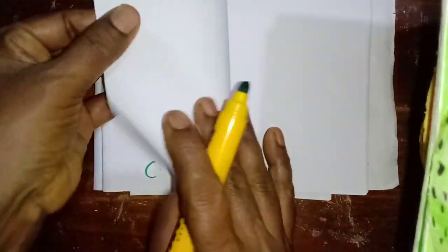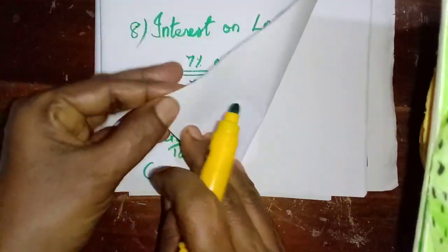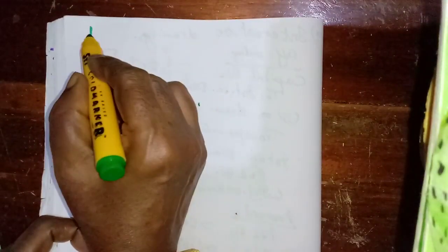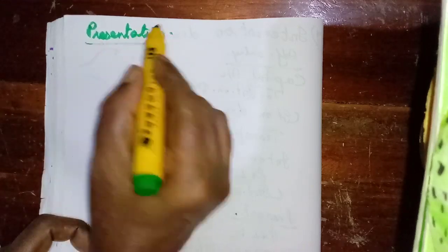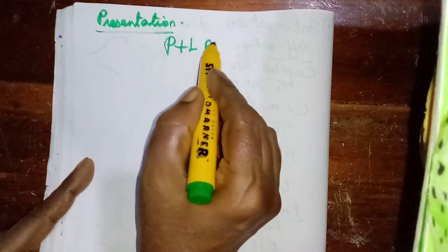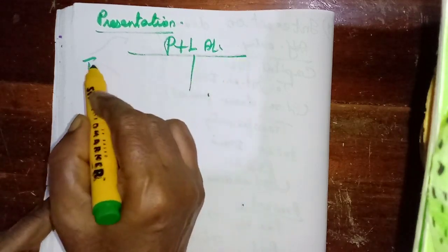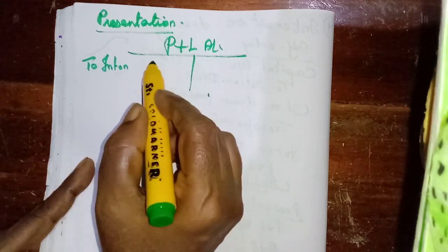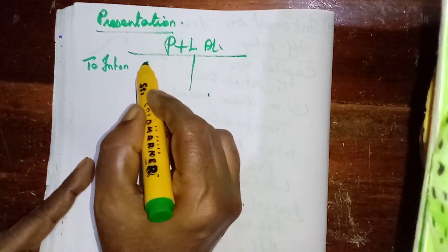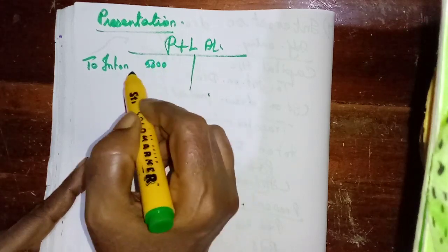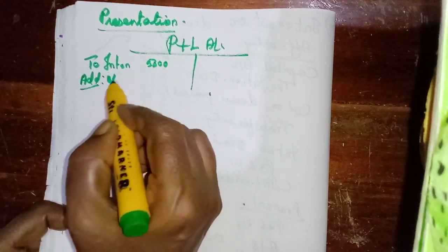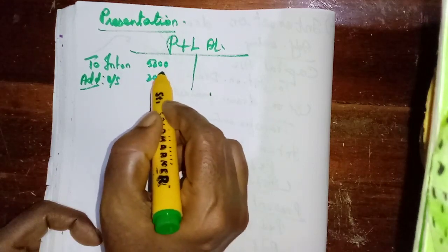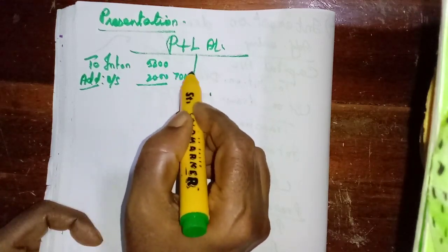Only this entry we have seen. Now the presentation in the final accounts. So the balance is 5,000, and we have to add outstanding interest on loan 2,000, so the total to write here is 7,000.